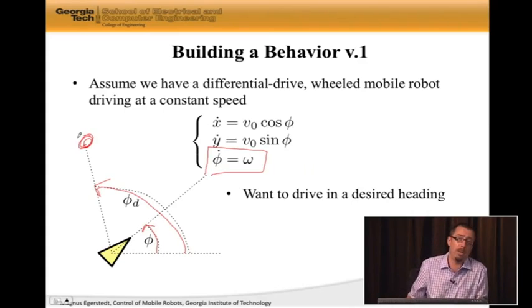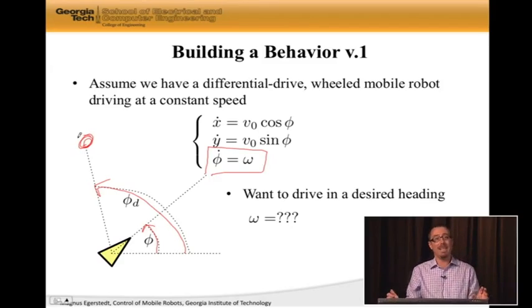How should we actually do this? Well, φ̇ = ω, so our job clearly is figuring out what ω should equal, which is the control input. So how do we do that?